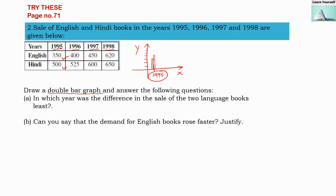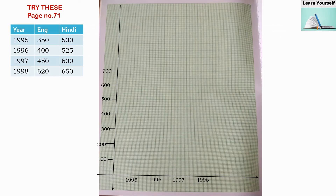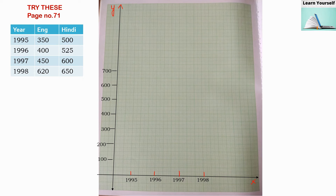We will first draw the bar graph and then answer the questions from it. On my graph sheet I have written the years 1995, 1996, 1997, and 1998 on the x-axis, keeping two boxes between each year. On the y-axis I have taken a scale of 100, 200, 300, 400, 500, 600, and 700 representing number of books.